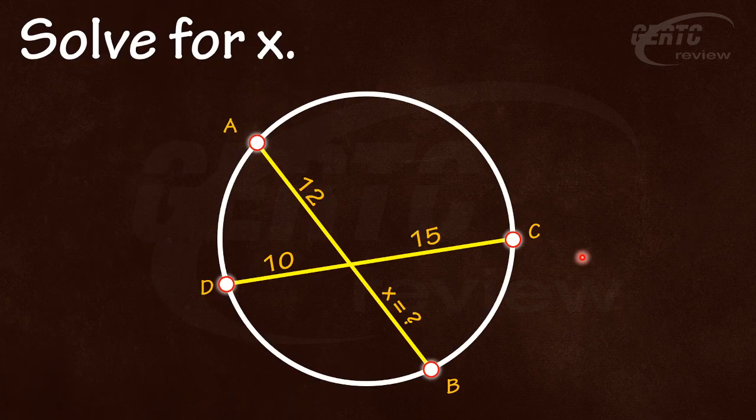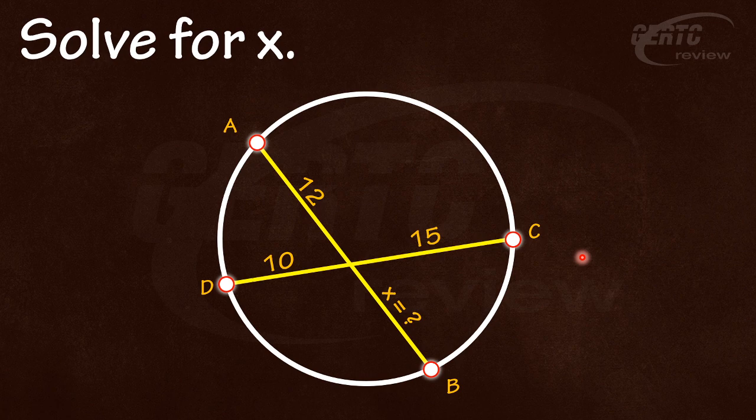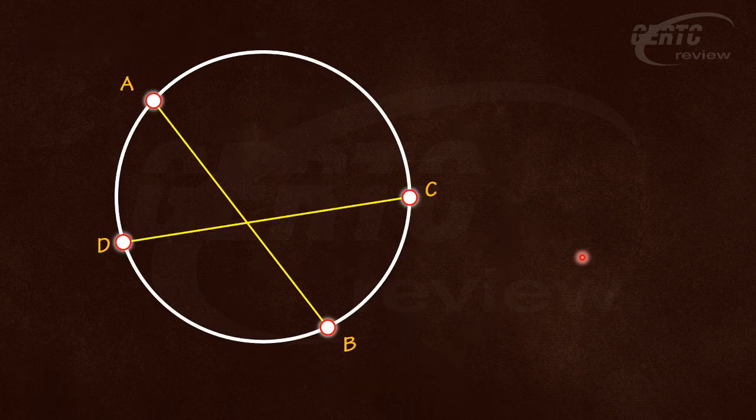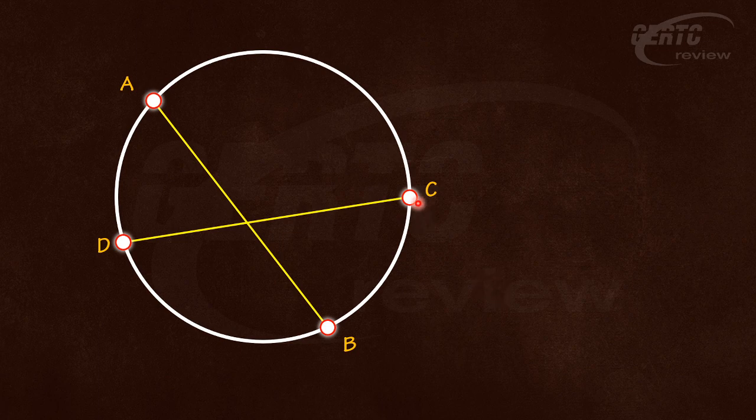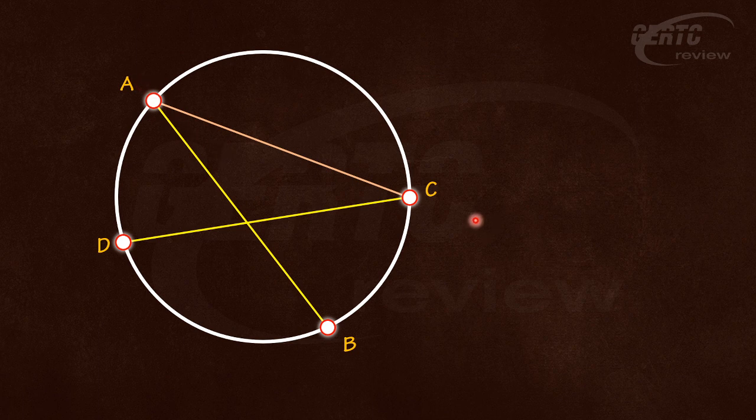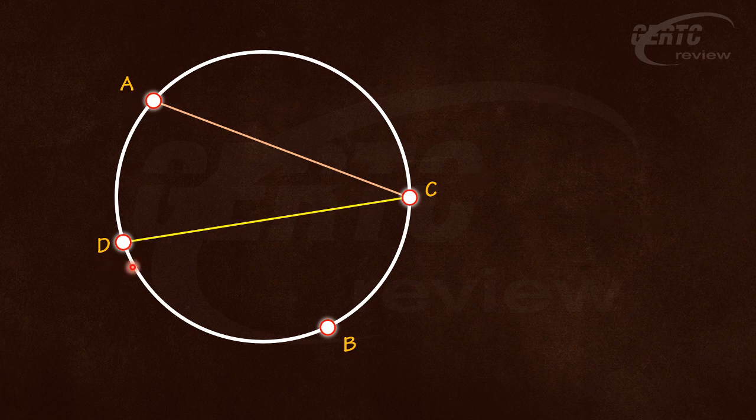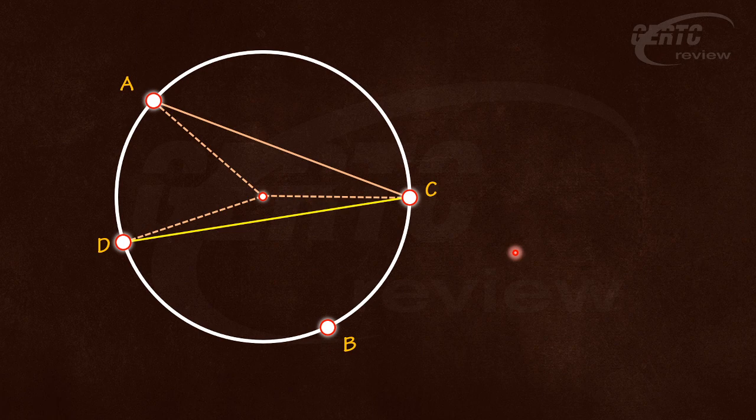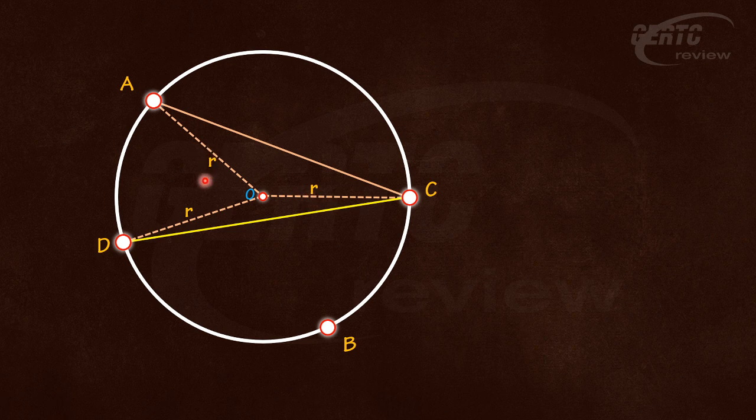Let's solve for the value of X. Let's prove something here. Let's connect AC and consider AC and CD first. Now let's connect the three points A, D, C to the center of the circle. Let's call the center O. And of course, these are the radius of the circle: R, R, R.